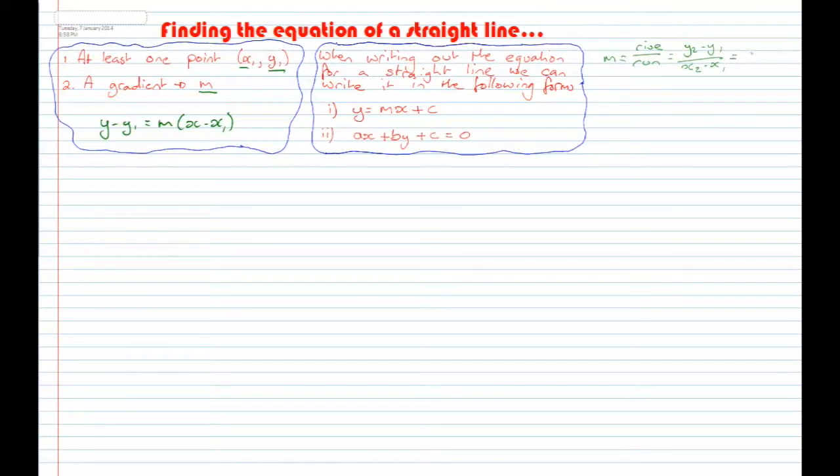Because sometimes you might not be given the gradient directly. Sometimes you might actually be given the rise and the run, or two separate points, or maybe even an angle made with the line and the X axis in order to be able to figure out the gradient and then use it in the formula.